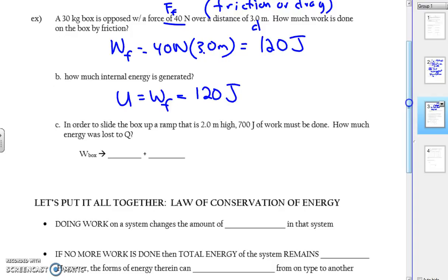Now let's look at how this can be used. In order to slide the box up a ramp that is 2 meters high, 700 joules of work must be done. How much energy is lost to U? So the work done on the box overall when we go up the ramp is equal to the work done against gravity plus the work done against friction. We just calculated the amount of work that is going to oppose us with friction based on the situation. So we just have to calculate the work done by gravity. Well, the work done on the box goes towards potential energy gravitational plus any thermal energy we get. So that's going to be mgh plus whatever U that we calculated before.